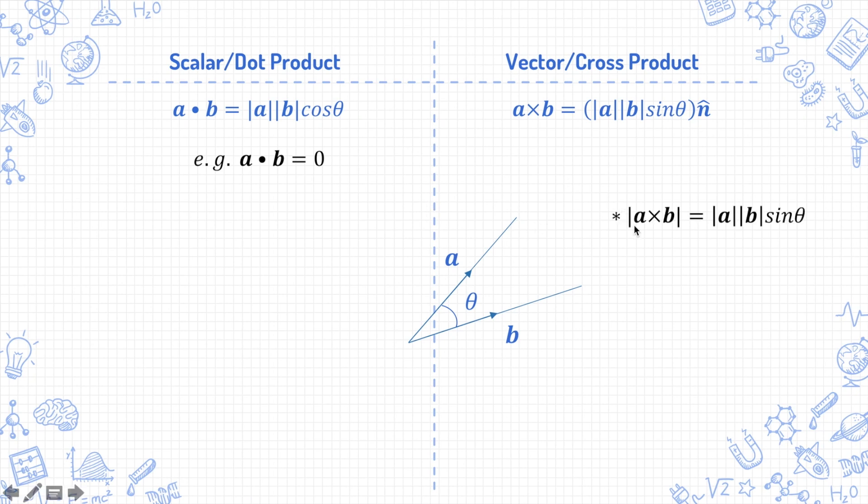So, mod of a cross b equals mod a mod b sin θ. We will rarely actually use this full equation. More often, we will use this one, which means that if your vector product gives 0, for example, a cross b equals 0, this is not the number 0. It is the 0 vector. And printed on paper, it is indicated by bolding the 0 here, compared to the unbolded number 0 here. But when you write it, you indicate it by drawing the tilde, the wavy line underneath. Just be careful of that.